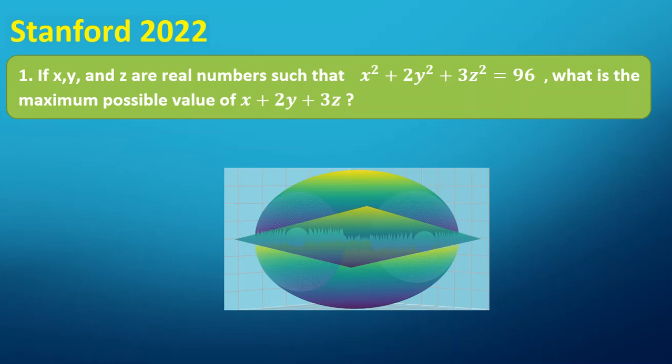If x, y, and z are real numbers such that x² + 2y² + 3z² = 96, what is the maximum possible value of x + 2y + 3z?